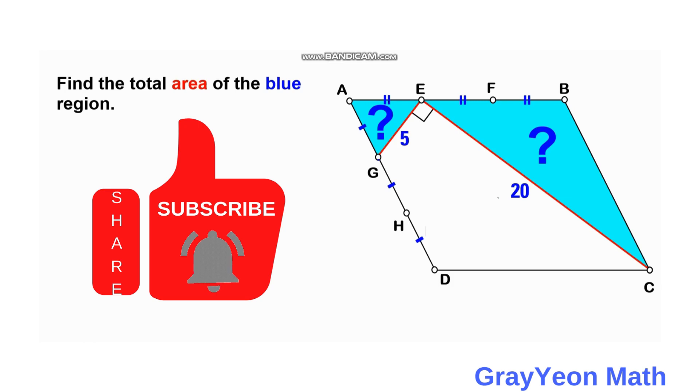And with these two lines form these two triangles, blue shaded triangles inside this parallelogram. So we are required to find the total area of this blue region.